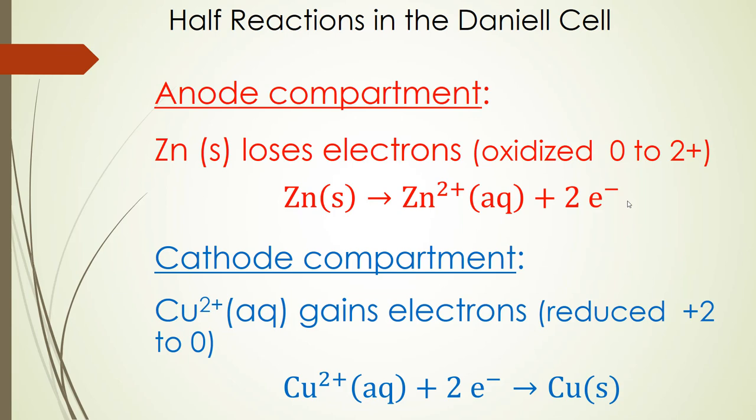In the cathode compartment, we have copper ions in the form of copper sulfate, so the sulfate is left out of the reaction. It gains electrons, so it is reduced. It gains two electrons to go from copper 2+ to copper solid. Notice that two electrons are transferred in the anode reaction, and those same two electrons are accepted in the cathode compartment by the copper 2+.